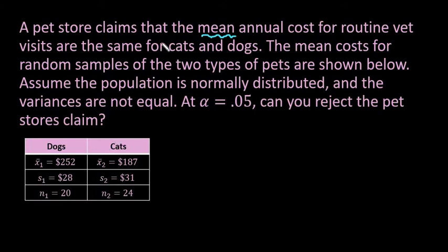Whenever you see the word 'mean,' that means you're going to use the symbol mu when setting up your hypothesis. Anytime you see 'proportion' or 'percentages,' you're going to use p — that's something you need to know.